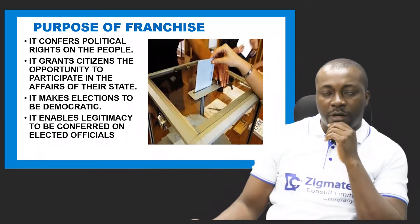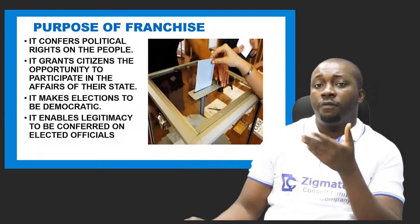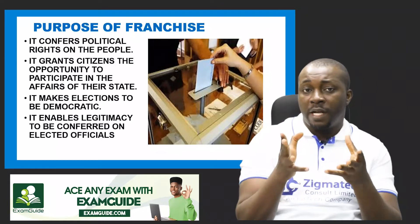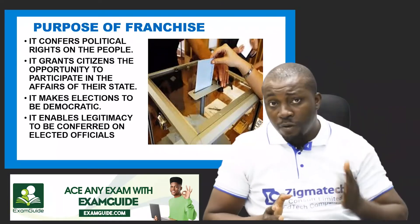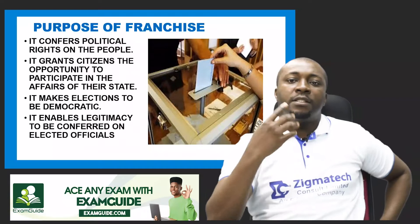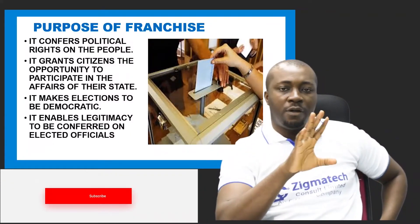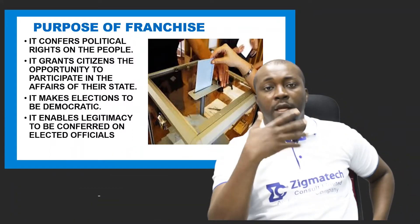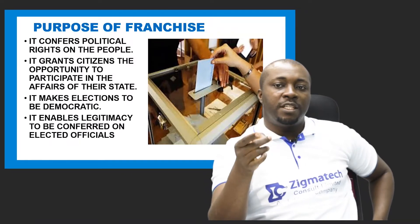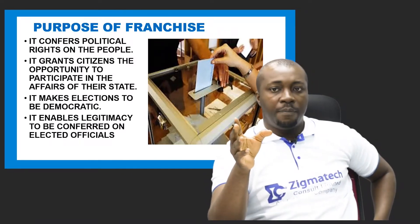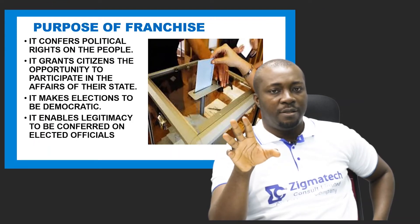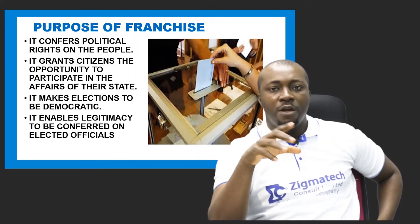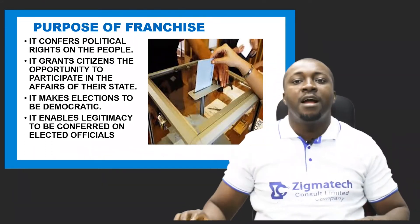Now let's look at the purpose of franchise — why people are given the right to vote and be voted for. First, it confers political rights on the people, with the right to vote and be voted for being the major political right. It grants citizens the opportunity to participate in the affairs of their state by contesting and voting. It makes elections democratic, and it enables legitimacy to be conferred on elected officials when citizens participate and exercise their franchise.